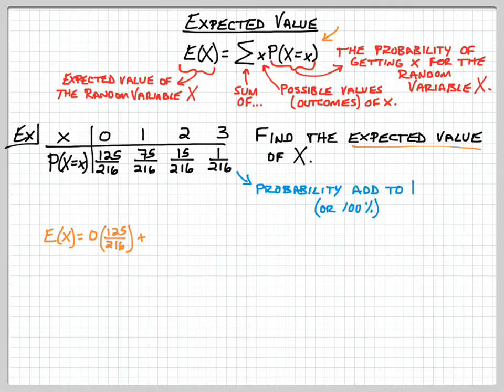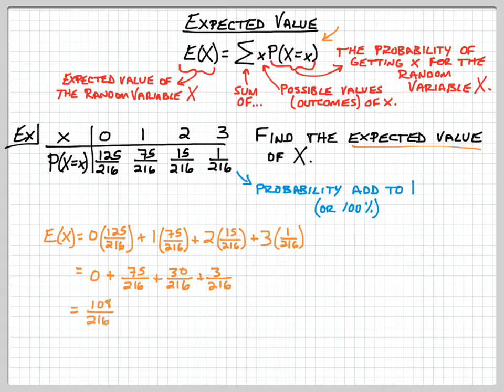And now we're going to add this up to all of the other ones. So we're going to say plus 1 times 75 over 216, plus 2 times 15 over 216, plus 3 times 1 over 216. So we keep on adding up. We get 0 plus 75 over 216, 2 times 15 is 30 over 216, and 3 over 216. So when we add all that up, we get 108 over 216, which is the same thing as 1 half, which is our expected value.